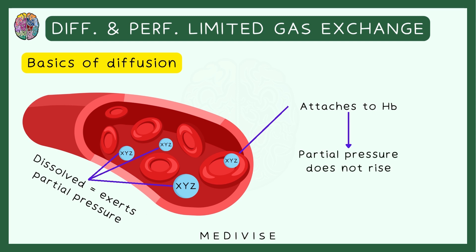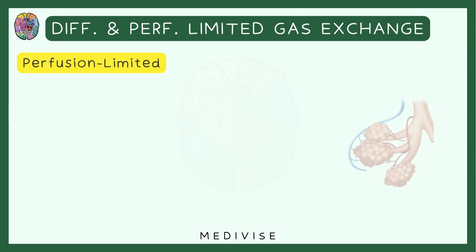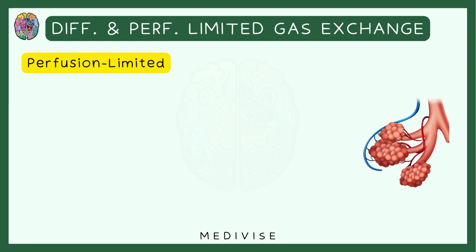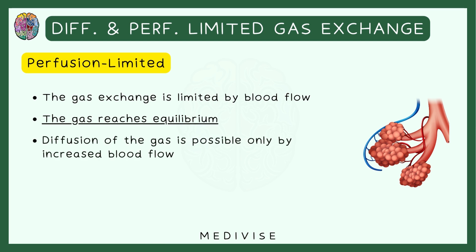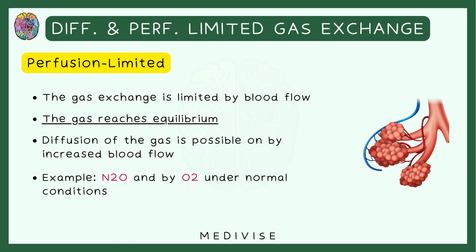This is very important to remember. Now let's start with perfusion limited gas exchange. This basically means that the gas exchange is limited by the blood flow. In this case, the equilibrium is reached. If you want more diffusion to happen, it is only possible when there is an increased blood flow. Examples of this include N2O and oxygen diffusion.